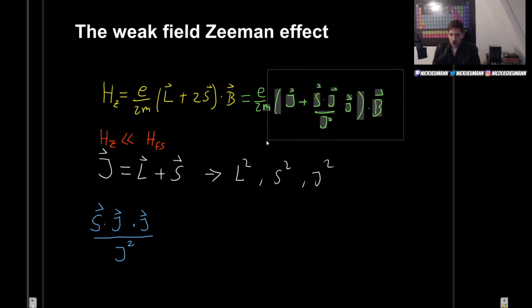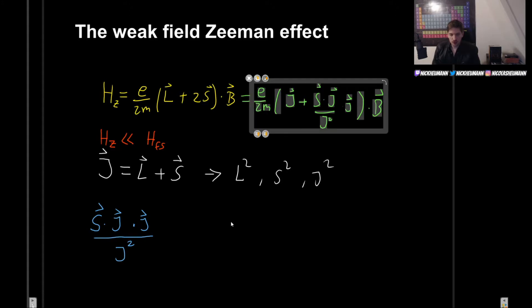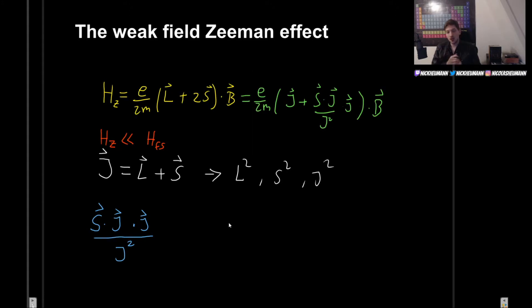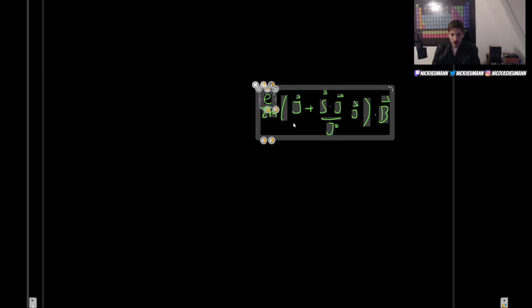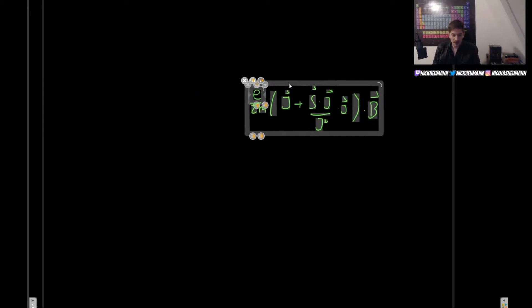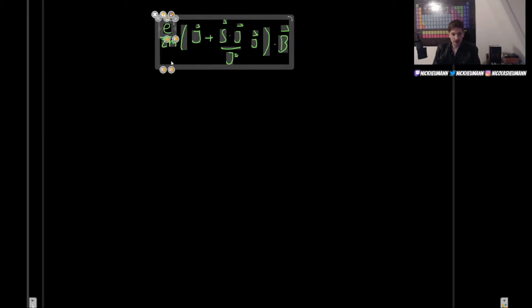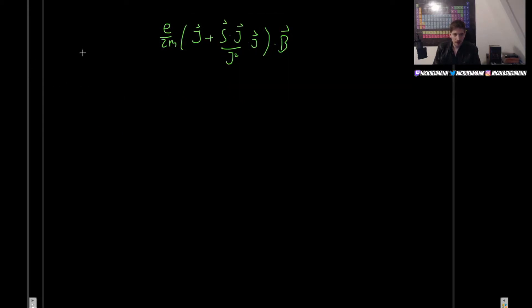Now we are finally in a position to begin looking for the energy levels. How can we find the energy levels? Well, what we have here are the good states, so the energy levels of this Hamiltonian will be the expectation value of the Hamiltonian.